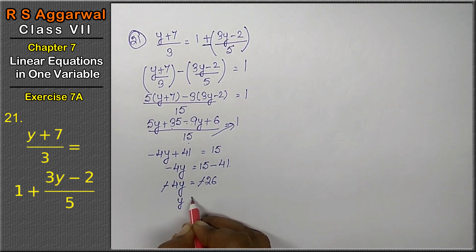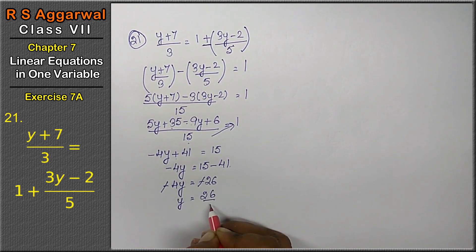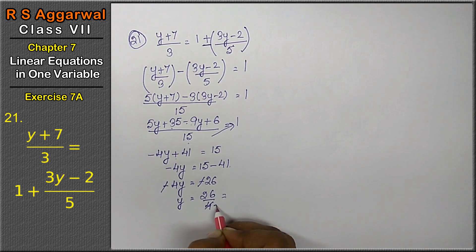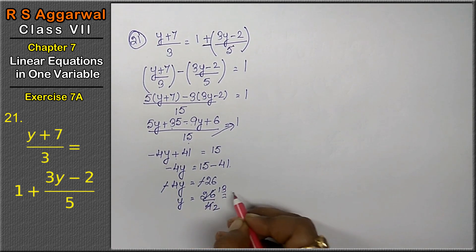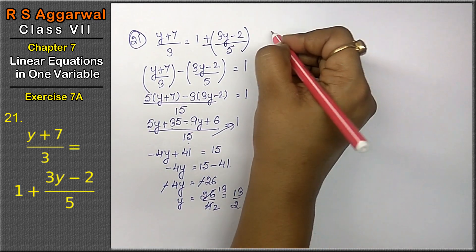Therefore y equals 26 upon 4, which simplifies to 13 upon 2. That is the answer.